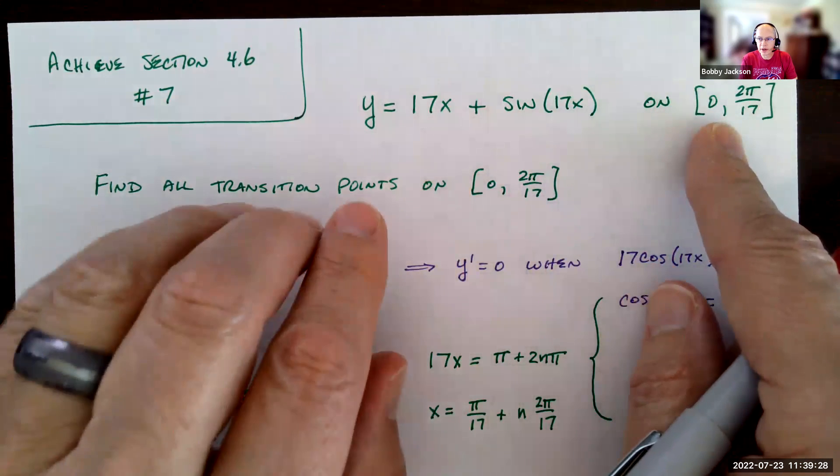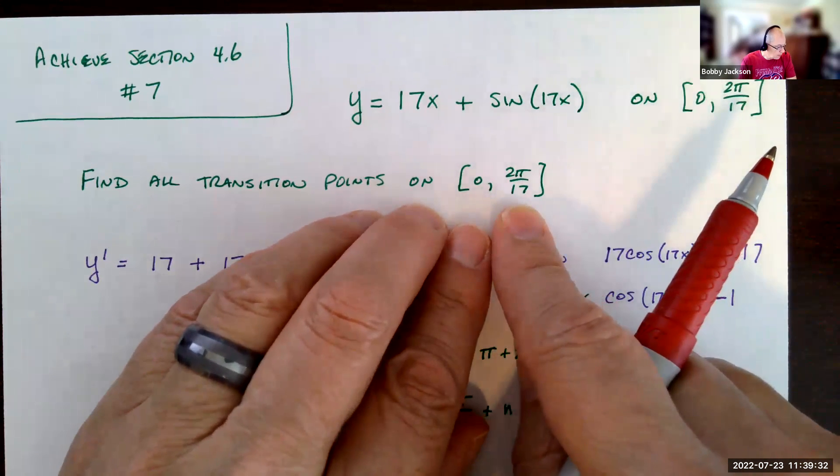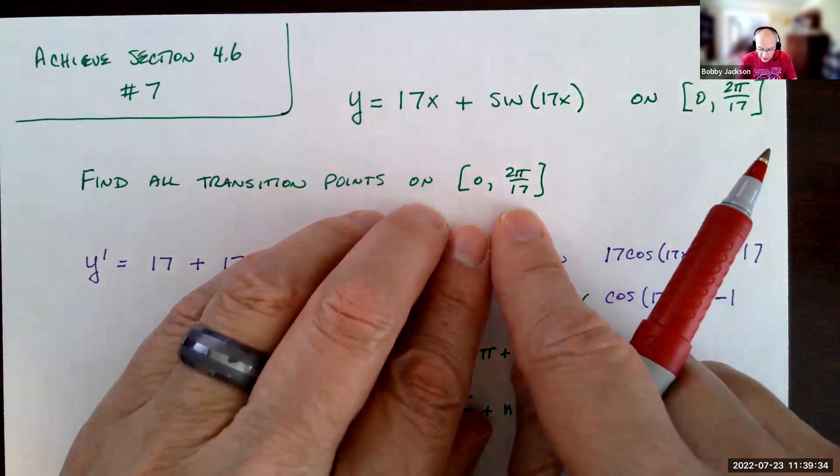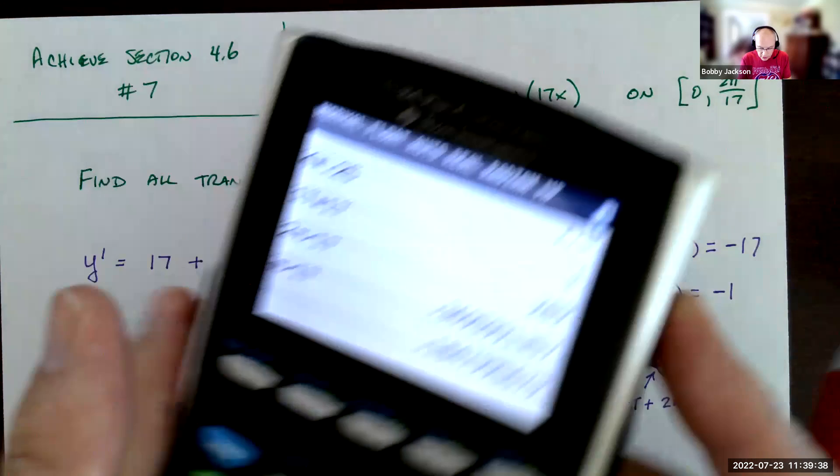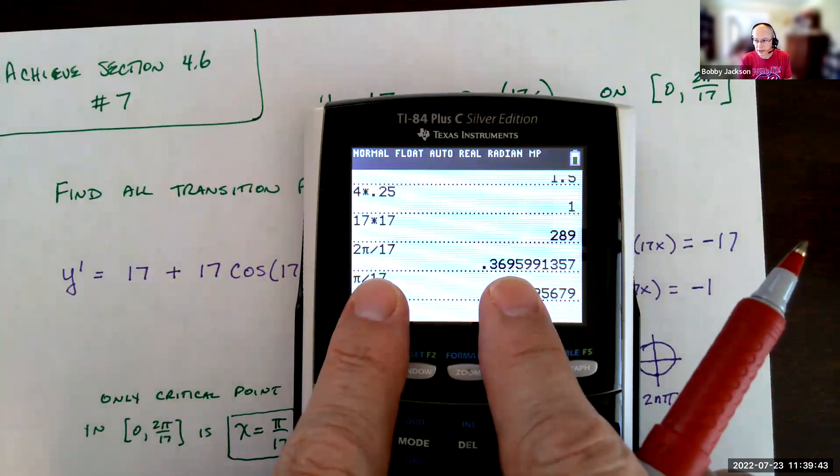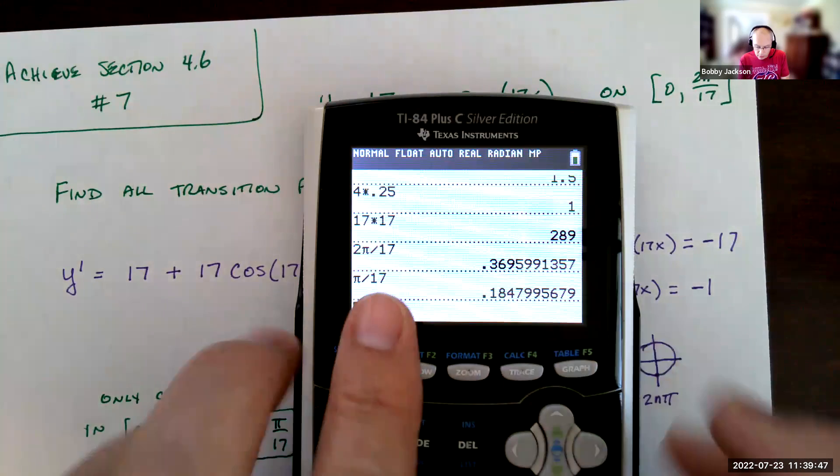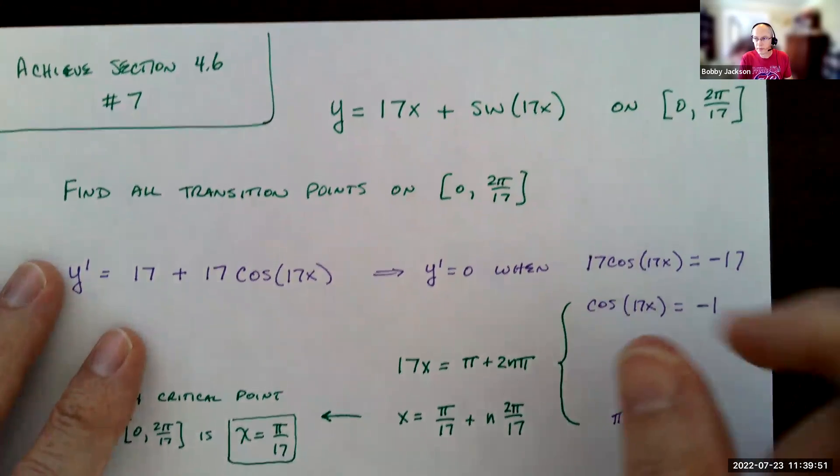We're to find all the transition points just on this interval. And 2π divided by 17, just for reference, I did a little calculation here, 2π divided by 17 is about 0.3695, so about 0.37 almost. I mean, that's the interval we're talking about, so very small interval, right?